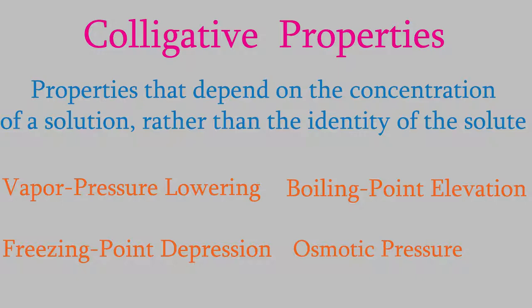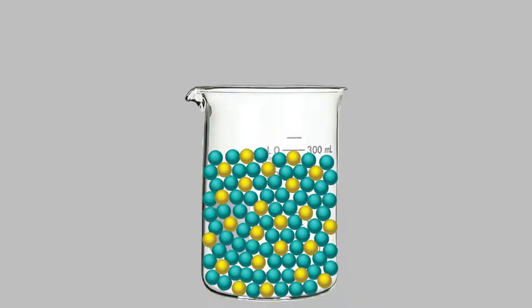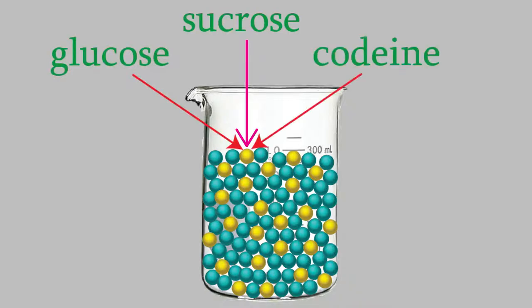In the last video, we talked about the first of these, vapor pressure lowering. When we did, we found out that it didn't matter what the solute was. The vapor pressure decreases just as much regardless of whether the solute is glucose, sucrose, codeine, or anything else. What does matter is how much of the solute there is. In other words, the concentration of the solute does matter.